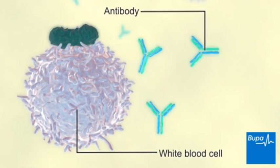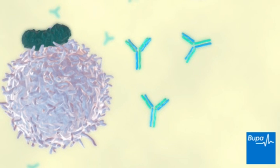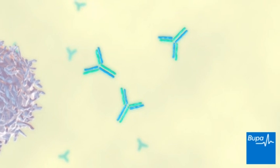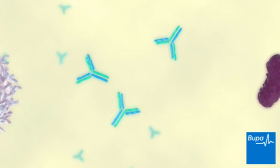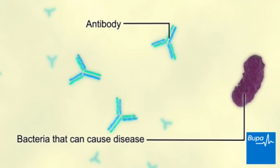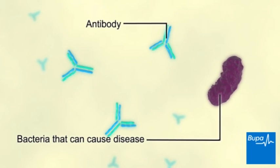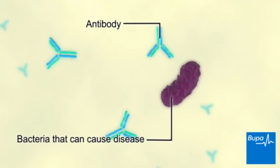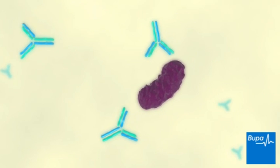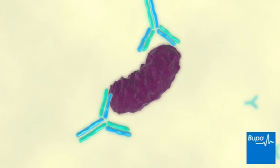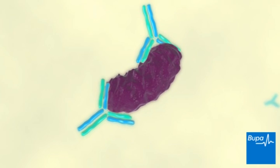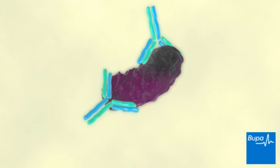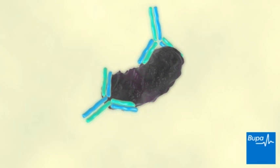If you're exposed to the bacteria that you have already been vaccinated against, the antibodies work fast and provide you with better protection. The antibodies will help your immune system to attack the bacteria and kill them.